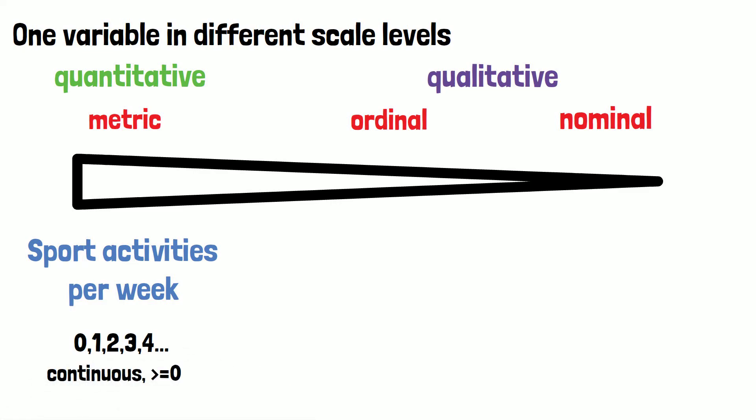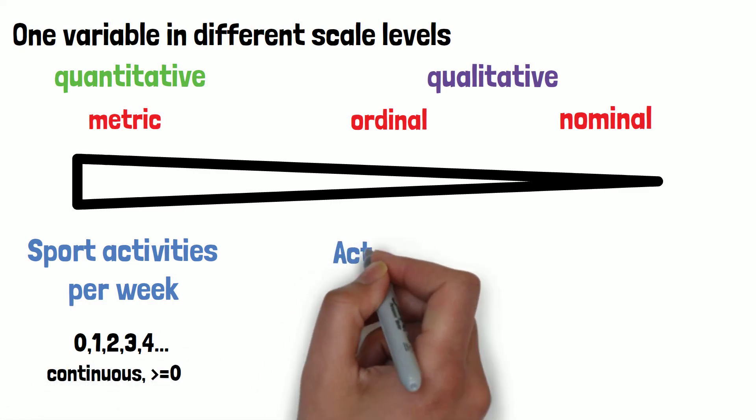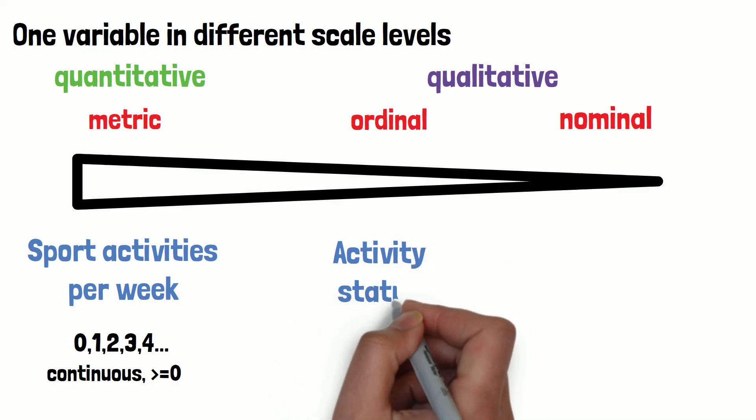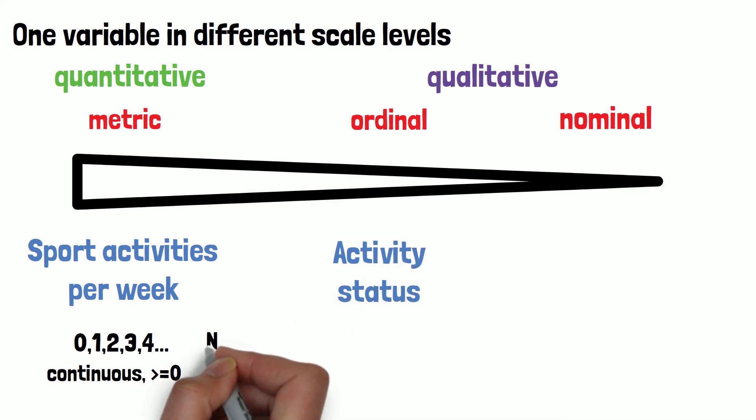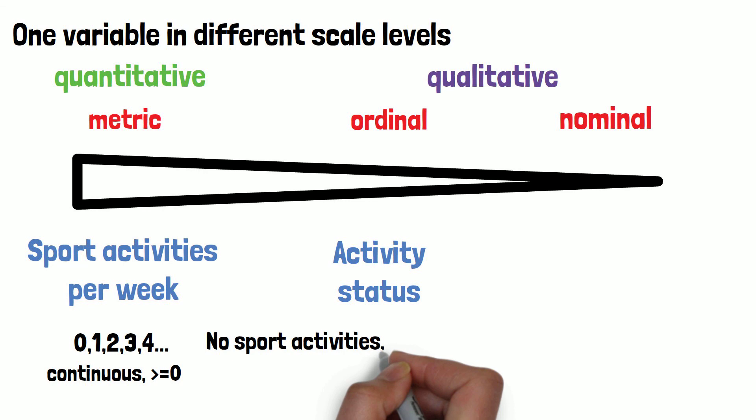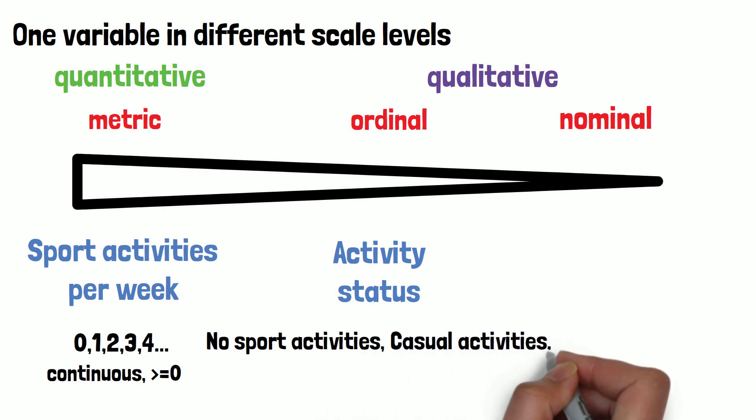If you want to analyze this variable as ordinal, you can break it down to activity status that we classify in four classes as following: no sport activities, casual activities, regular activities or daily activities.